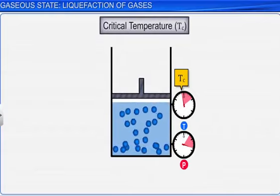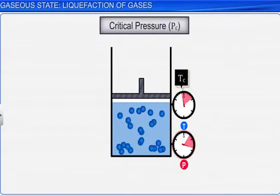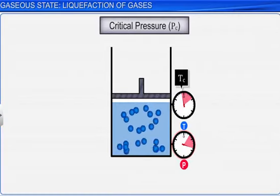The minimum pressure required to liquefy one mole of a gas, at critical temperature, is called critical pressure, Pc.